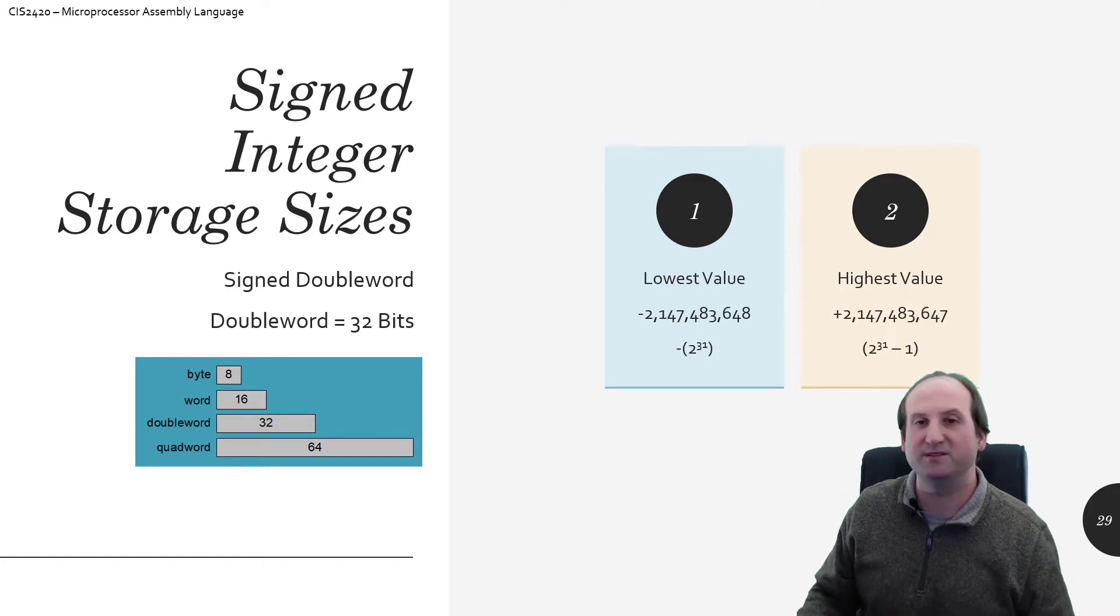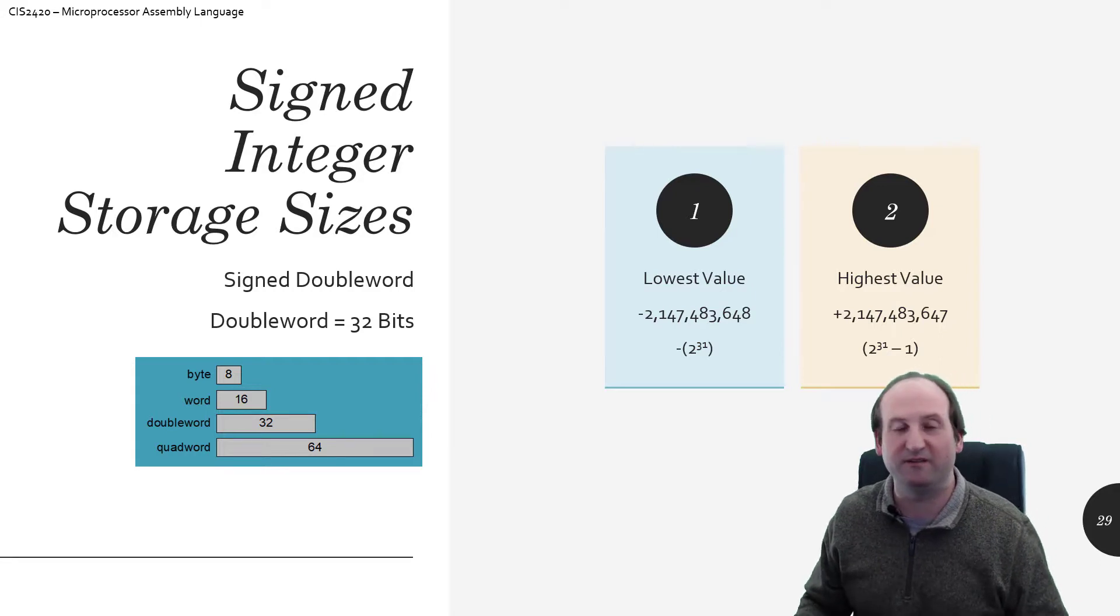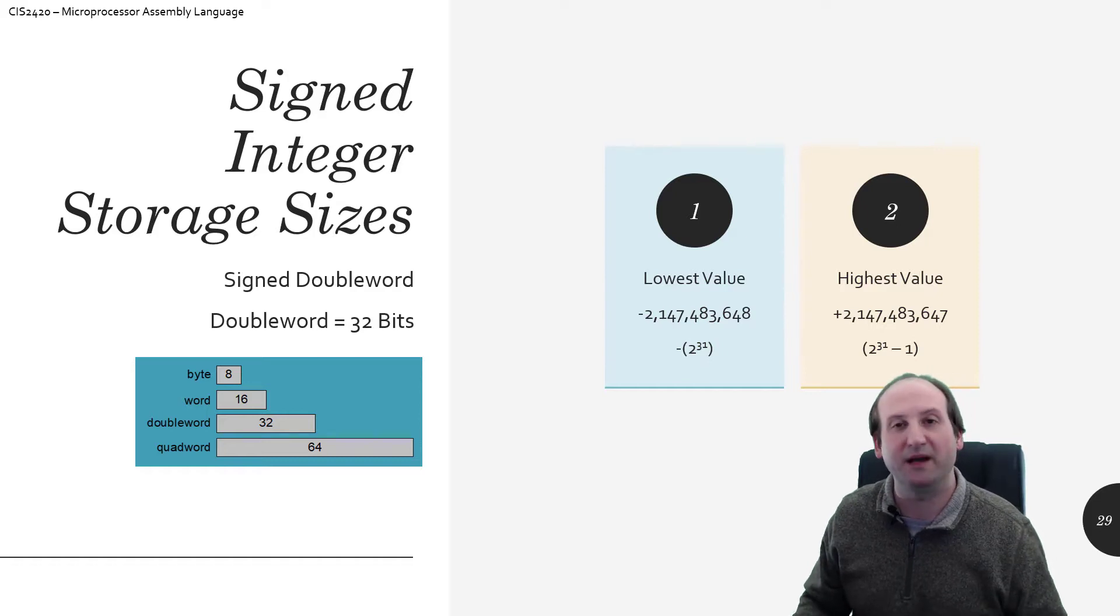Exactly the same for double words here, signed double words. It's just, of course, more switches. So in this case, there's 32 bits of total storage. So the smallest value that we can see here is negative 2 to the 31st power, or negative 2.147 billion. And then on the other end, it's positive 2.147 billion, or 2 to the 31st power minus 1.